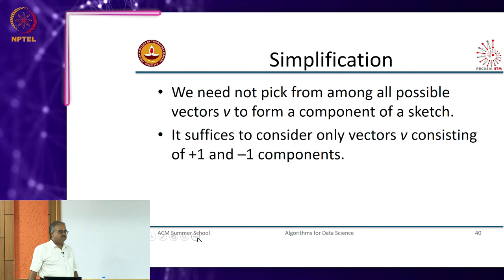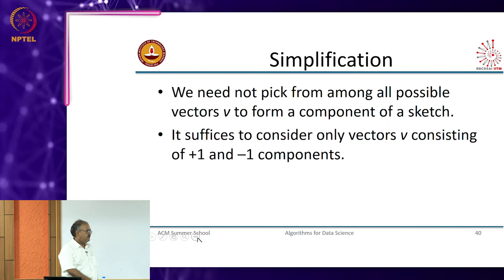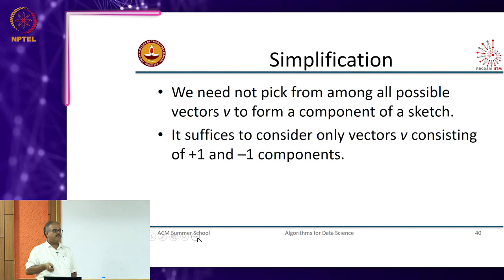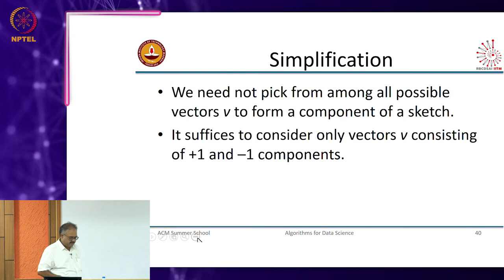But this is typically used for cosine similarity with documents, where dimensions will be like 10,000, 20,000, or 30,000. There, doing only plus or minus 1 is more than enough, and you save a lot in computation time because you are just doing additions and subtractions without any multiplications.